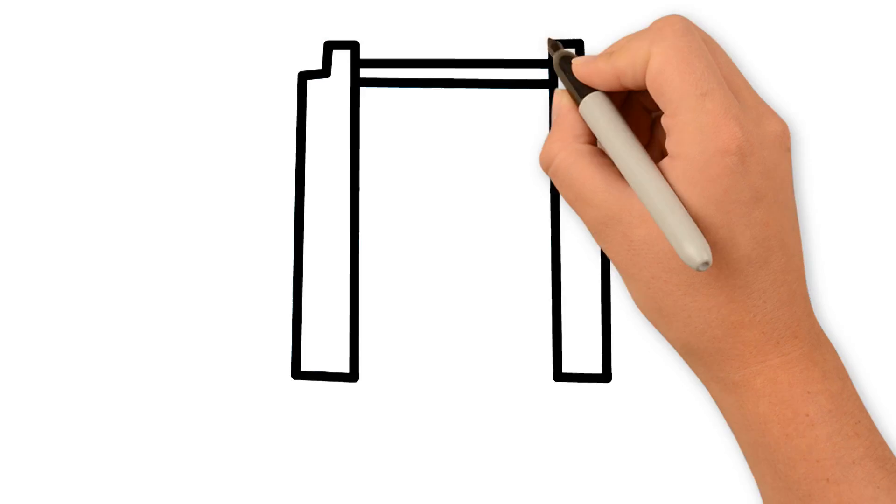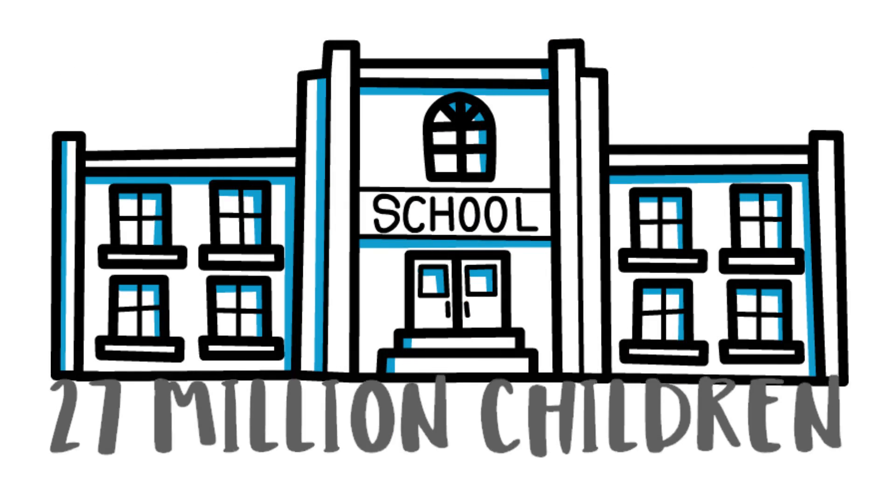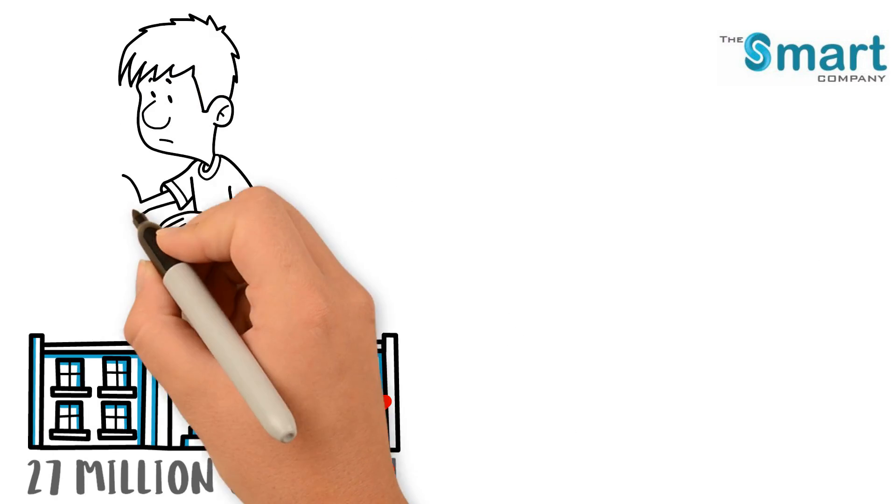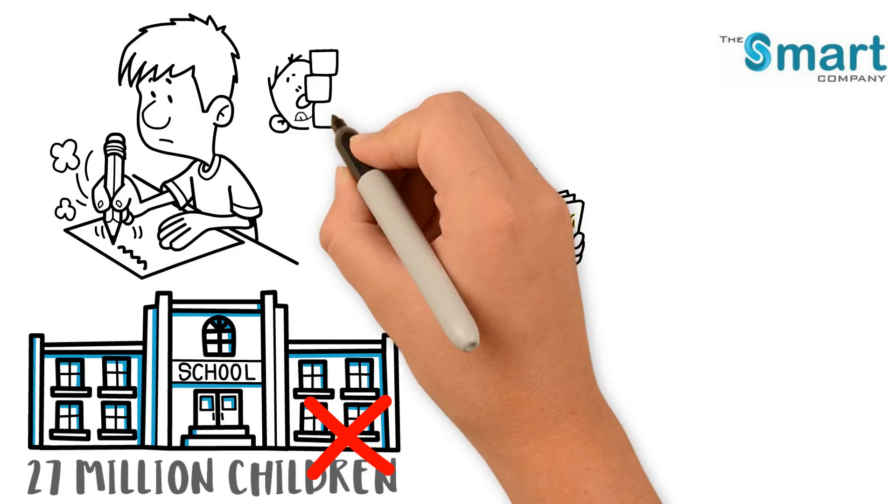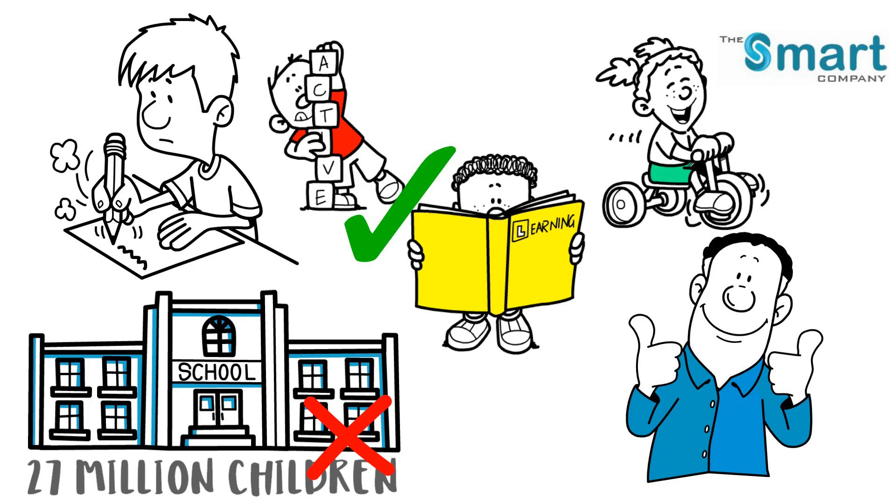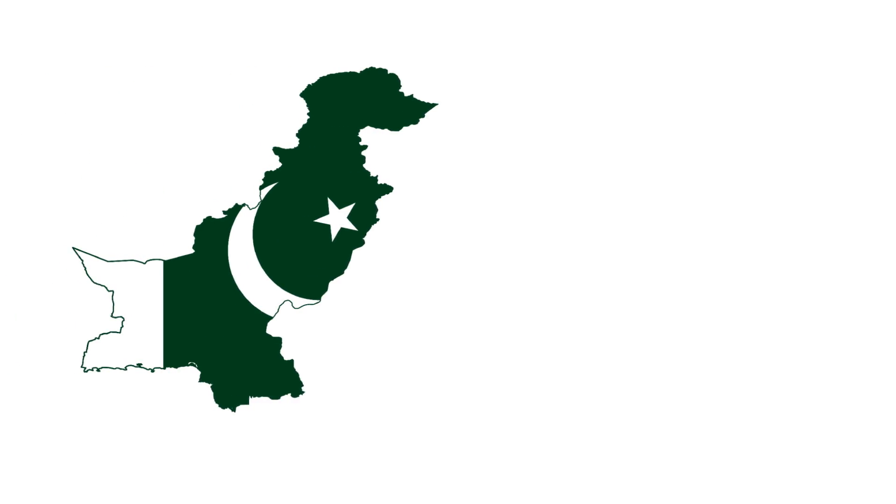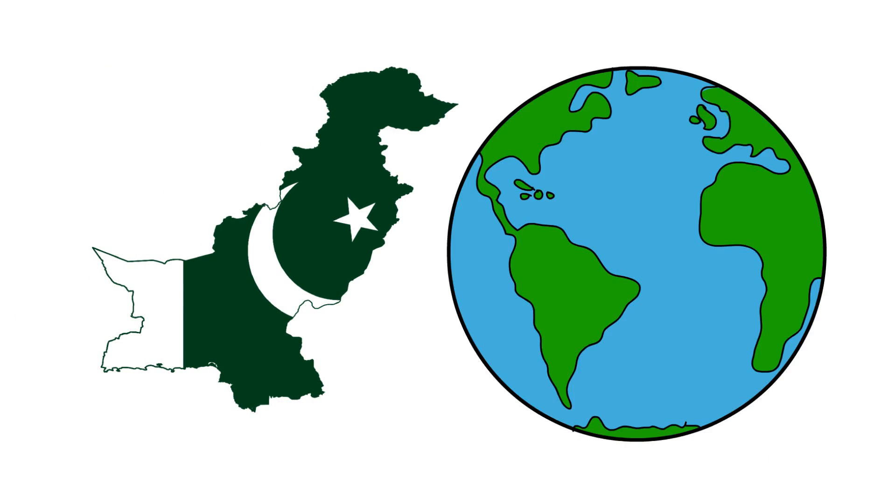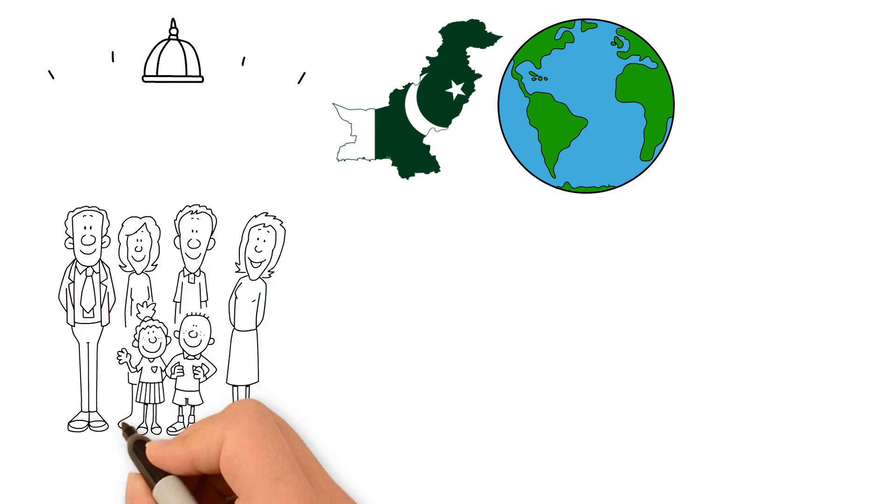27 million children in Pakistan are out of school. The Smart Company Group working in collaboration with the Talim Foundation are working towards ending this and providing the much needed education to help our country's future. We hope that smart education will be replicated across the country and the globe, finding smarter ways to help achieve much needed help for the families.